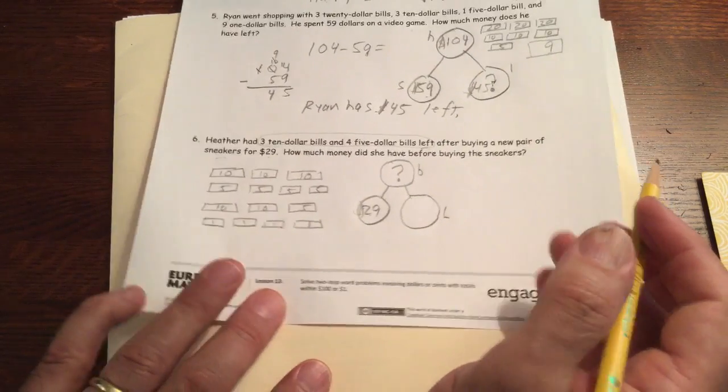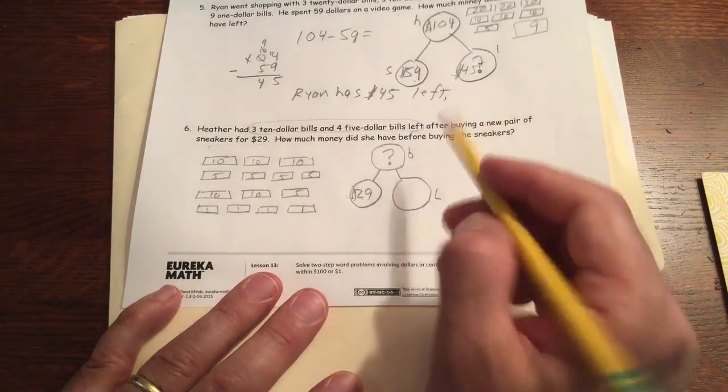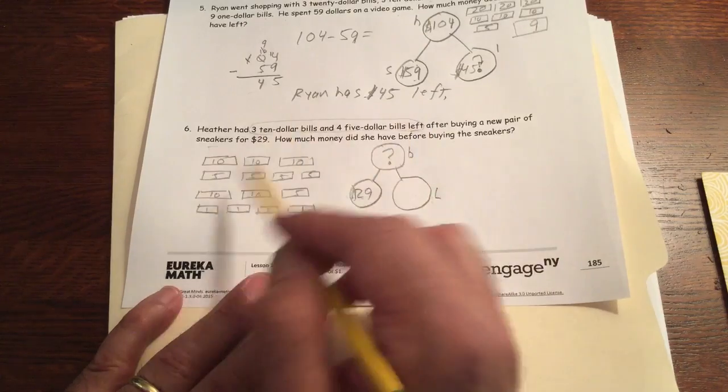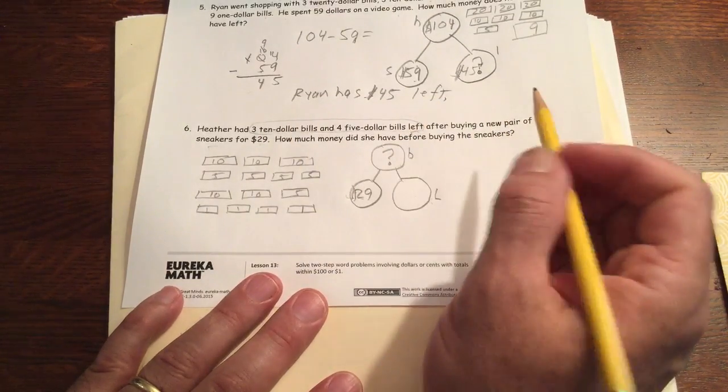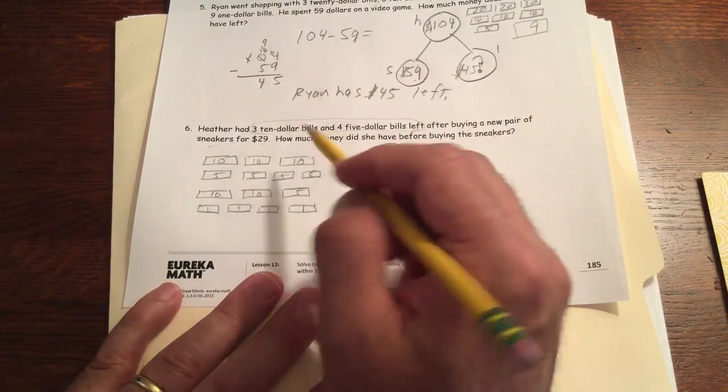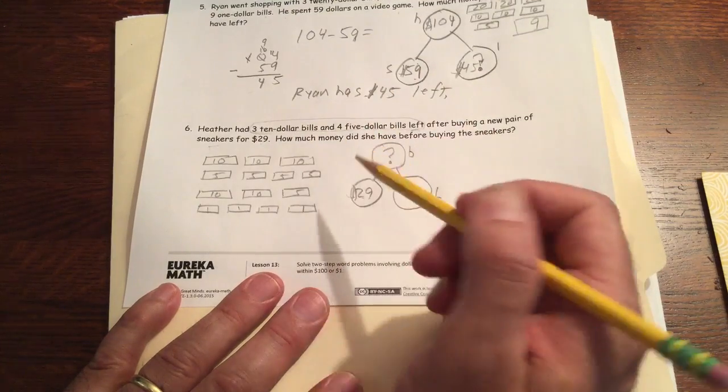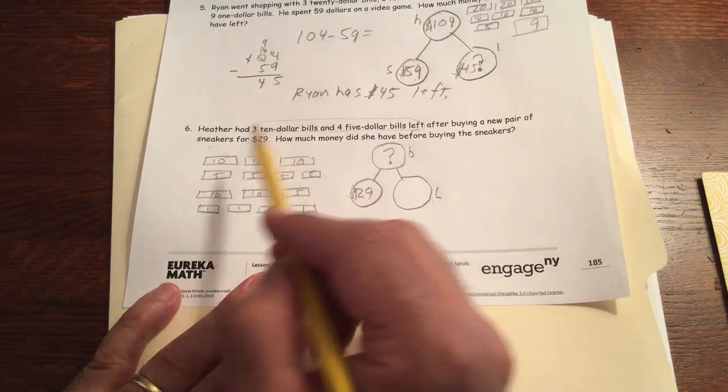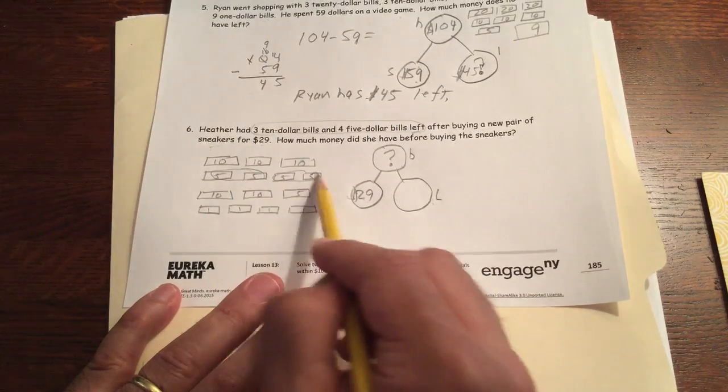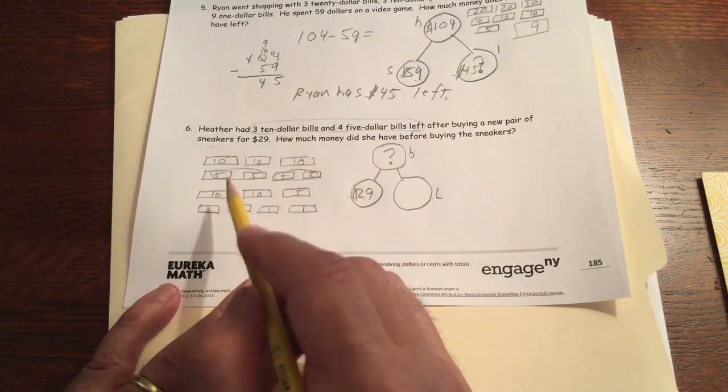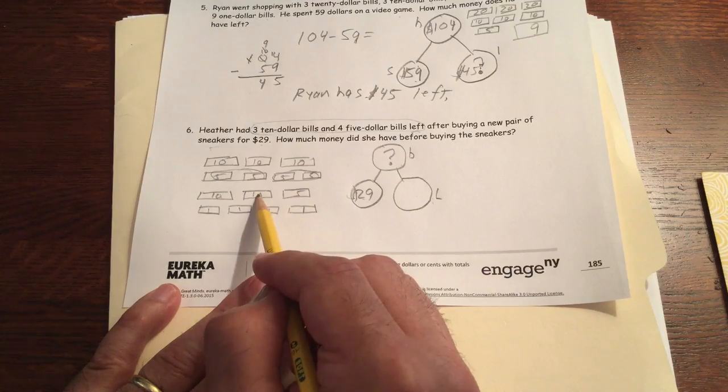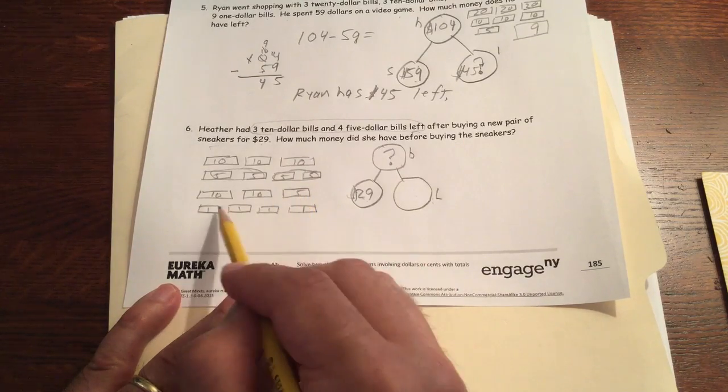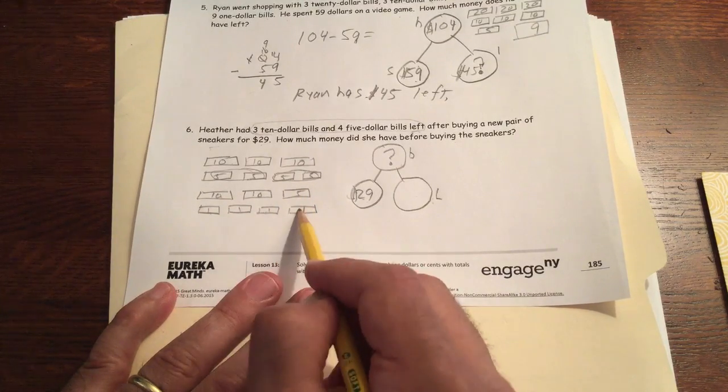And then we could just count it all. And we don't even have to figure out how much this is. We can just count it all and save ourselves a step in the two-step problem and do it in one step. Now we just count our picture. $10, $20, $30, $40, $50, $60, $70, $75, $76, $77, $78, $79.